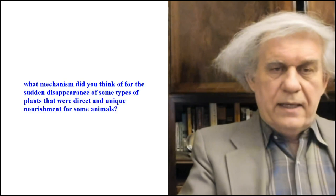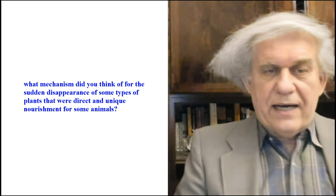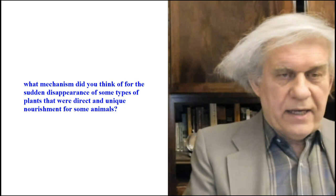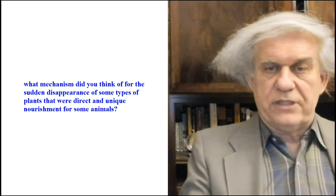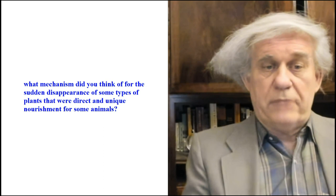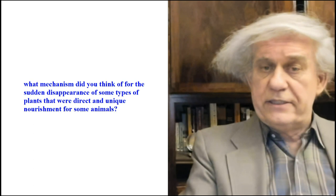There was a fellow who asked a question about extinction. I'm going to cover his question because I think it's important to go through the little steps. He asks: what mechanism accounts for the sudden disappearance of some types of plants that were direct and unique nourishment for some animals? The theory is that we had ecological collapse — essentially the overturning of the ecological pyramid — and what disappears is primary production.